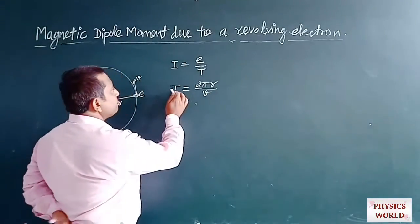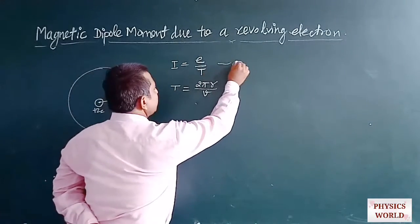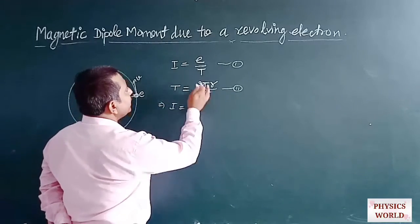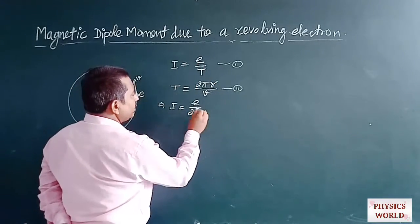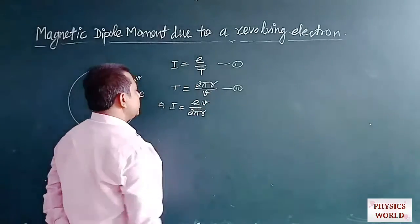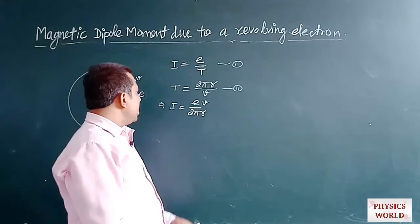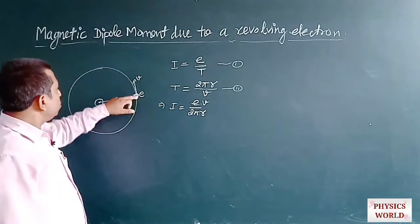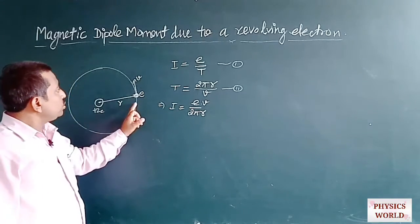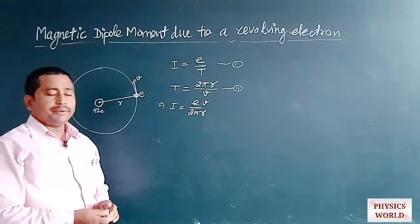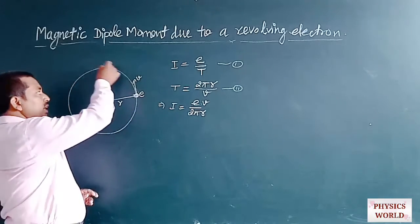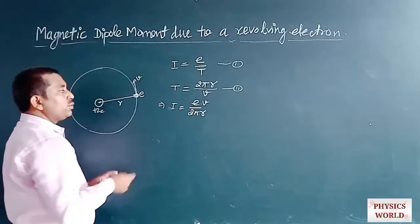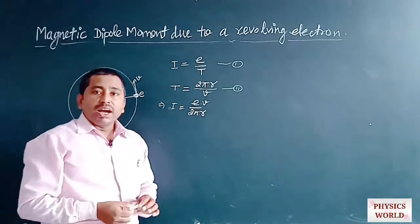Substituting this value of T into the current equation, we get I = E divided by (2πR/V), which simplifies to I = EV / (2πR). This is the amount of current produced by the revolving electron during its revolution around the nucleus.